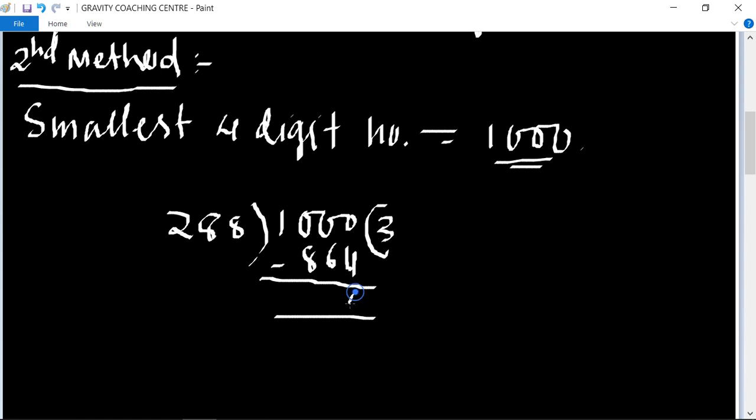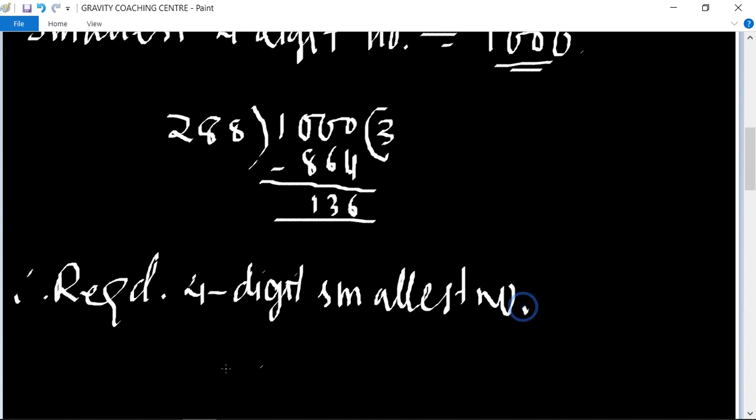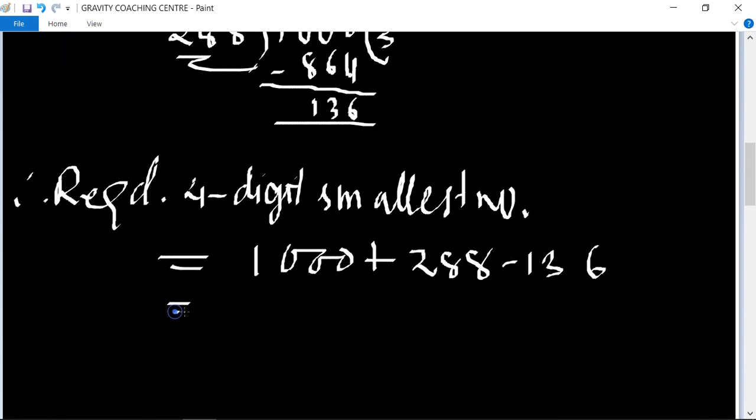The remainder is 136. Therefore, required smallest four-digit number equals 1000 plus 288 minus 136.